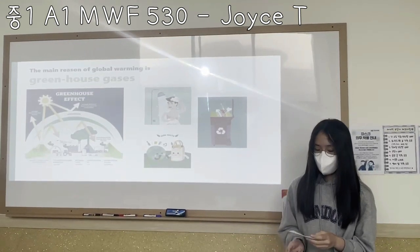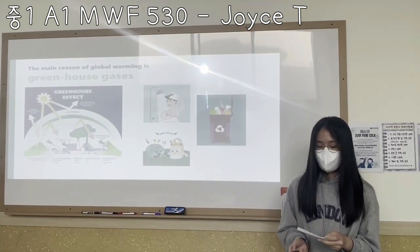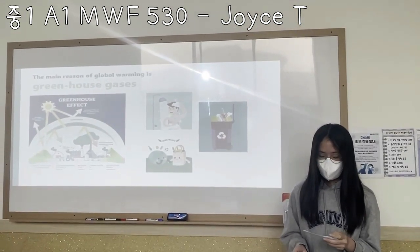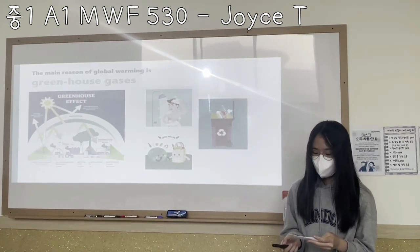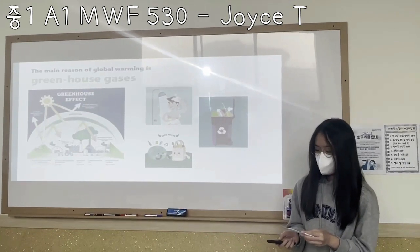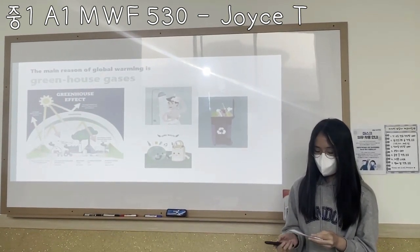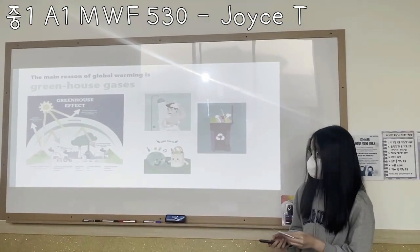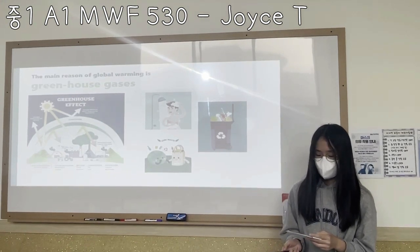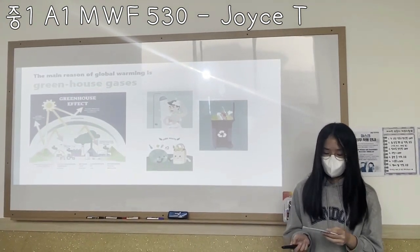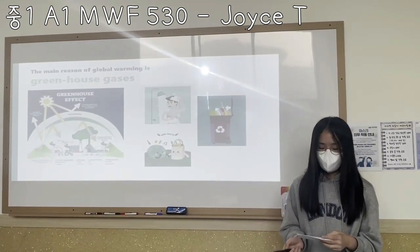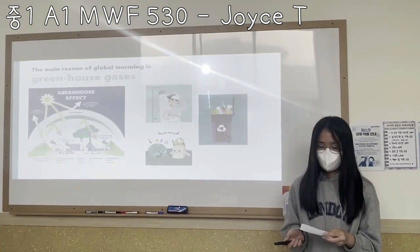The main reason for global warming is greenhouse gases like carbon dioxide. We should make various efforts to reduce greenhouse gases. We can reduce greenhouse gases by reducing energy use. Therefore, we must start with small practices and work to make the Earth beautiful again.